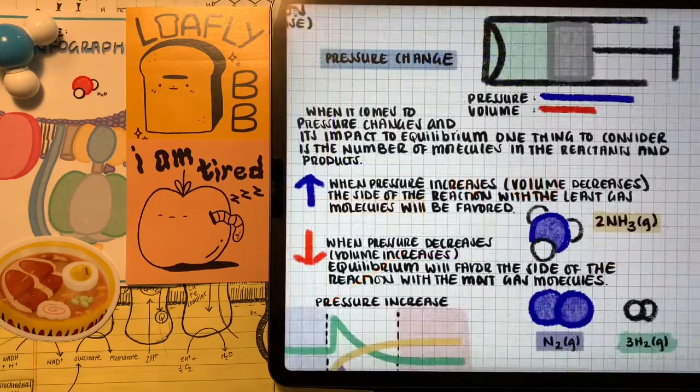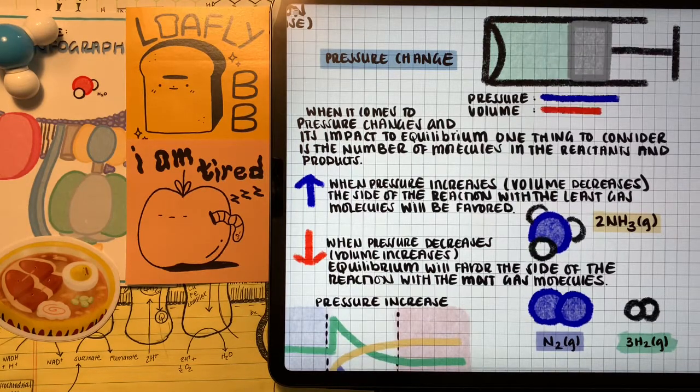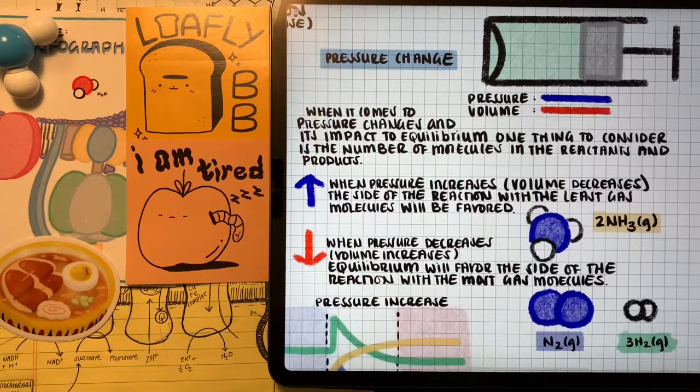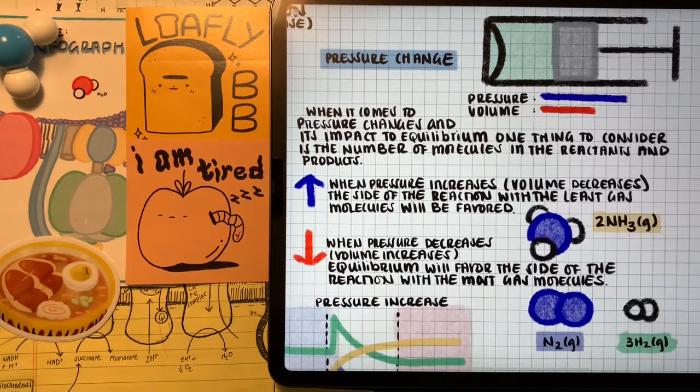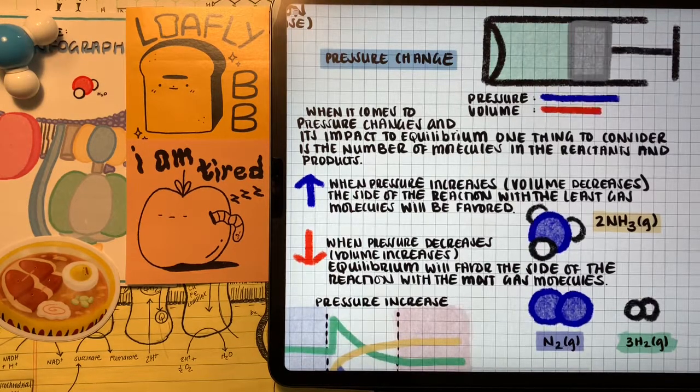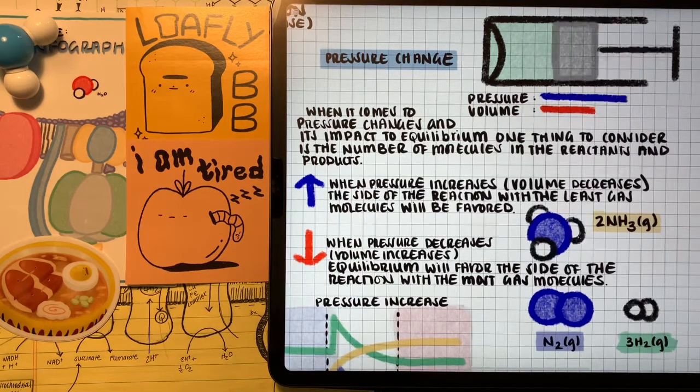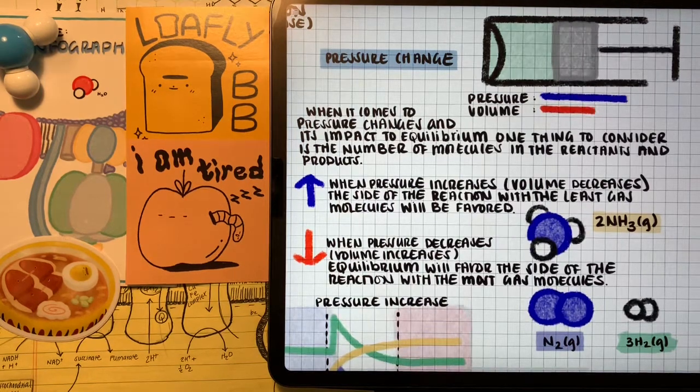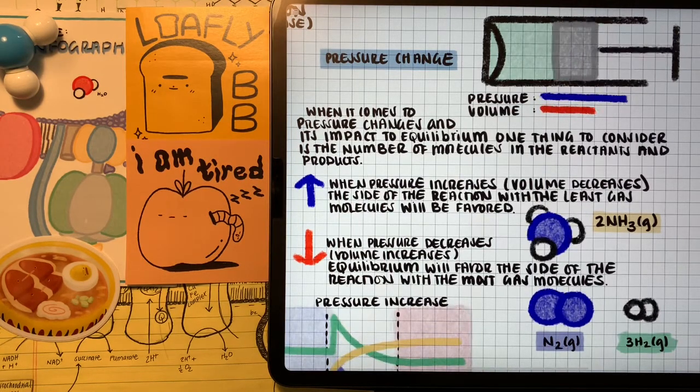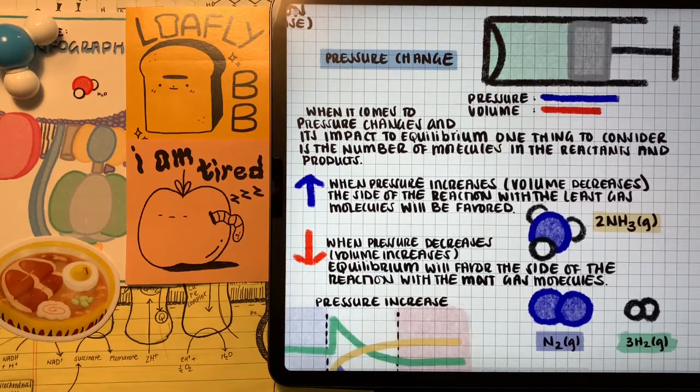Now let's talk about how when we have a system at equilibrium and we change the pressure or the volume, how it impacts the equilibrium. Well, if we increase the pressure and decrease the volume, the side of the reaction, products or reactants, with the less amount of gas molecules is going to be favored. So for the example of nitrogen and hydrogen gas coming together to form ammonia, in the reactants we have three moles of hydrogen gas and one mole of nitrogen gas for a total of four moles of gas. But in the products we only have two moles of gas of ammonia. So if we're increasing the pressure, the forward reaction is going to be favored forming ammonia. So the percentage of ammonia, once we increase the pressure, is going to be higher at equilibrium.